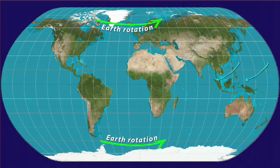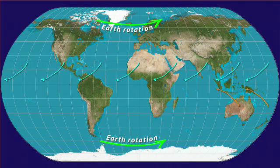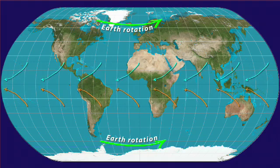North of the equator, these winds are oriented northeast to southwest. South of the equator, the winds are southeast to northwest. These tropical latitude winds are called the trade winds.